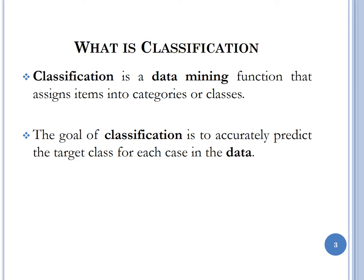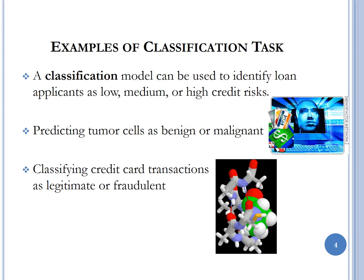Classification is a data mining function that assigns items into categories or classes. The goal of classification is to accurately predict the target class for each case in the data. For example, a bank trying to determine if they should approve a loan for a client can use decision trees to classify clients into different risk categories — low, medium, or high — and then approve or deny the loan based on those categories.